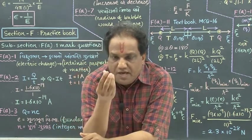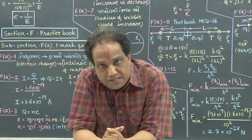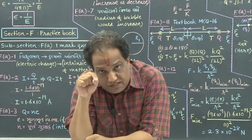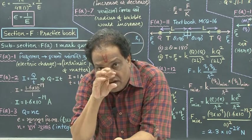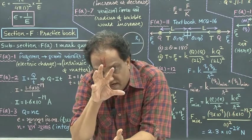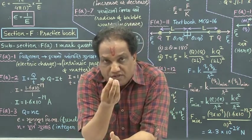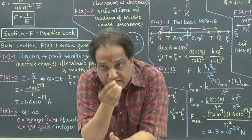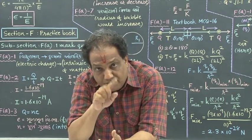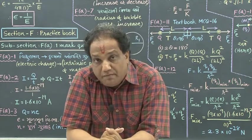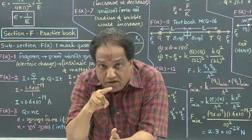Every charge has its own electric field in the surrounding region. It is the basic nature of electric charge to produce electric field. For a positive charge, its electric field lines are going away from it; for a negative charge, electric field lines are pointing towards it. But practically, we find that for the same quantity of electric charge, when we place it in different media, the strength of electric field at a given point from that charge is different.